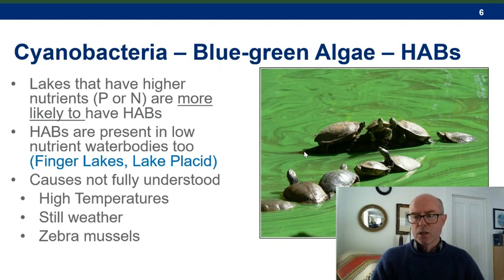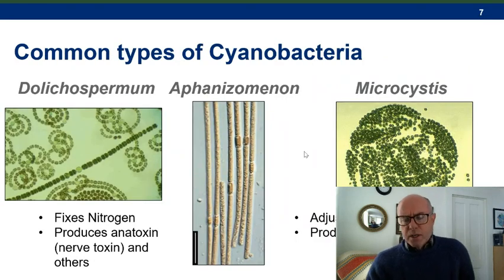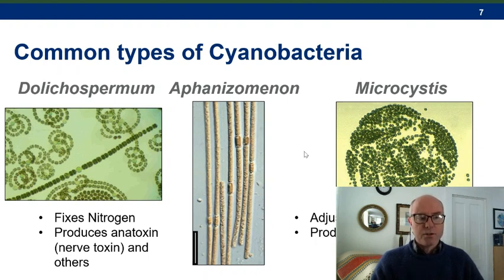The causes are not fully understood but we're getting closer. High water temperatures and still weather allow algae to come up to the surface. Zebra mussels and quagga mussels have also been implicated in their prevalence. The cyanobacteria most commonly seen in central New York are Dolichospermum and Aphanizomenon — these are able to fix nitrogen, so they don't rely on nitrogen in the water, and they produce anatoxin, which is a nerve toxin.